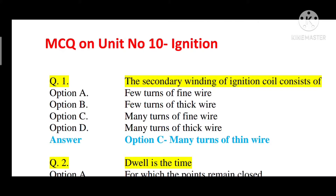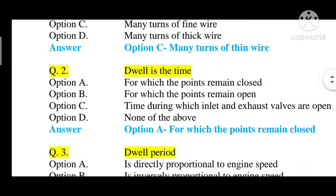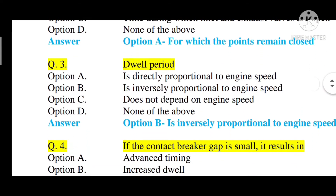The correct answer is option C — many turns of thin or fine wire. Question number two: dwell is the time — option A: for which the points remain closed, option B: for which the points remain open, option C: the time during which inlet and exhaust valves are open, option D: none of the above. The correct answer is option A — for which the points remain closed. Dwell is the time when the points remain closed.